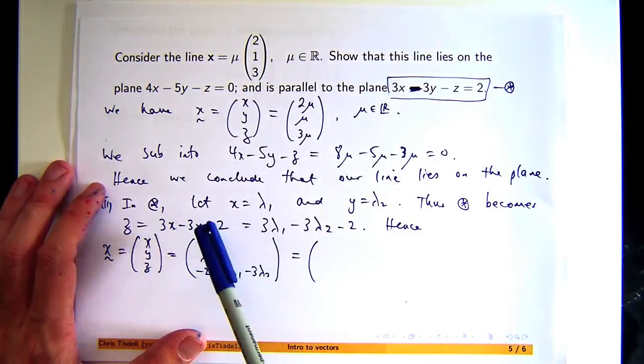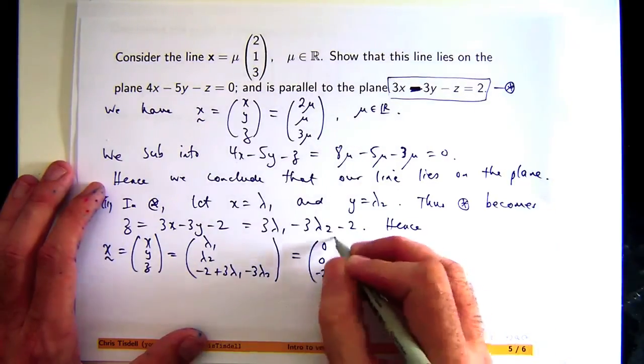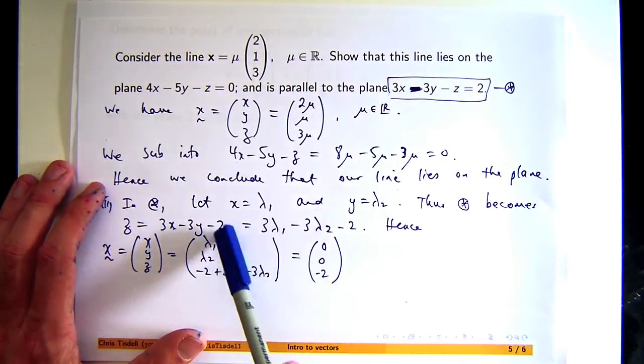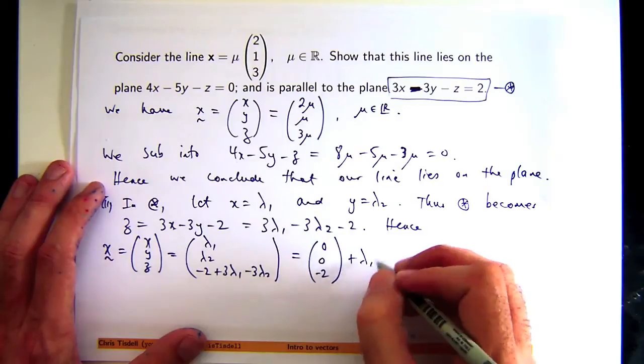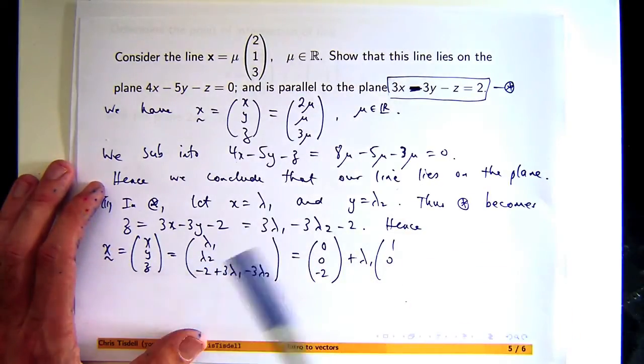So if I break this up, let's look for the constants. There's zero constants there, zero constants there, and a negative 2 there. Let's look for the lambda 1s. There's one lambda 1 in the first component, zero lambda 1s there, and three lambda 1s there.